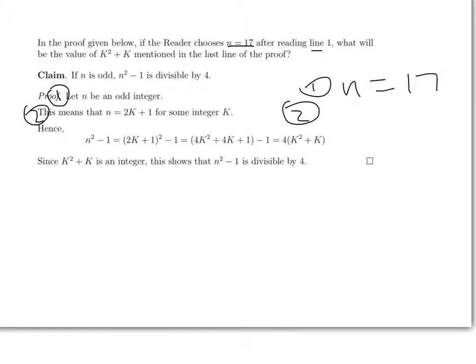then in line 2 we're saying 17 is twice something plus 1. In this case something will be 8. So in other words, k will be 8.